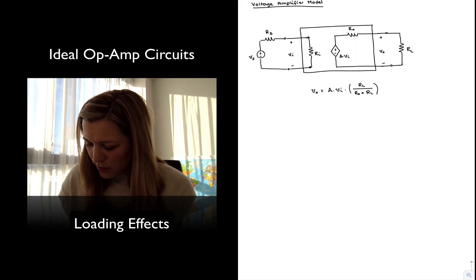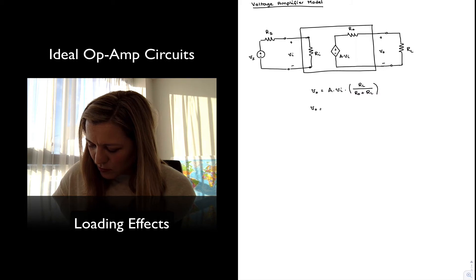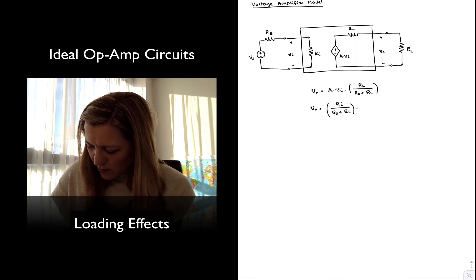Therefore, V_out is equal to R_in divided by RS plus R_in times the gain times the output loading factor times VS.